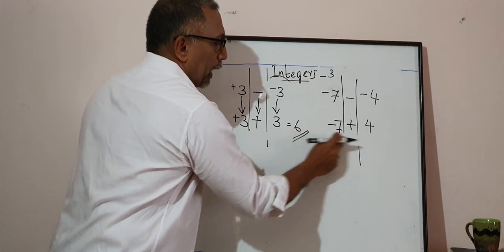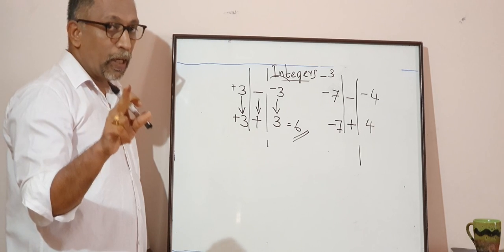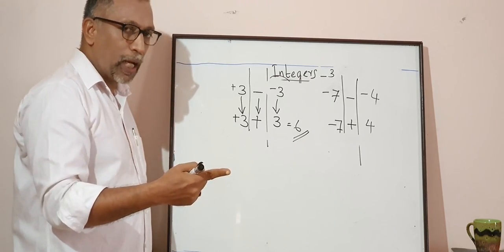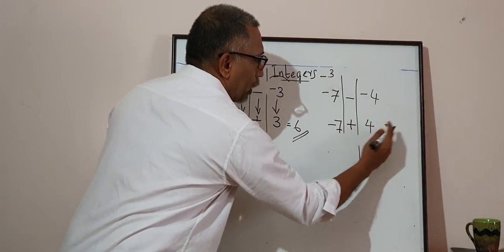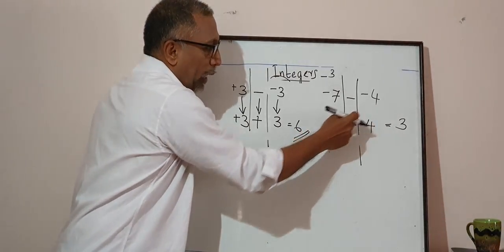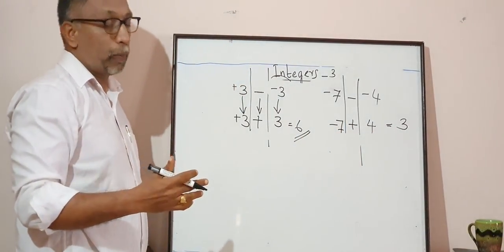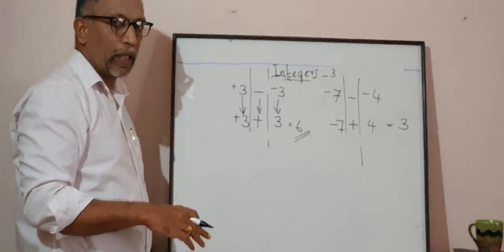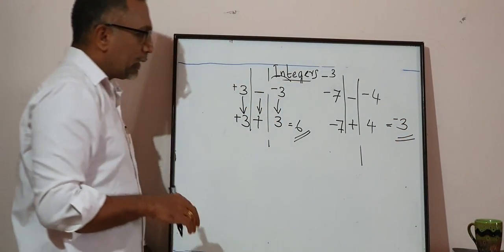Negative 7 plus 4 — these two numbers have different signs. When signs are different, we go for subtraction of the absolute values: 7 minus 4 is 3. Then we look at the sign of the bigger number. The bigger number is 7, and its sign is negative. So the answer is negative 3.